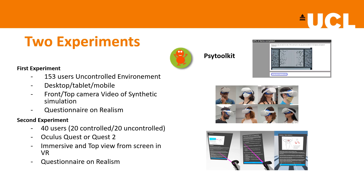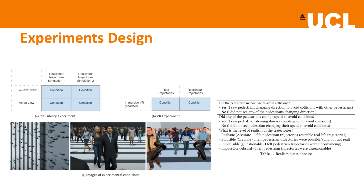The second experiment was performed in VR and measured how users perceived the realism of rectilinear trajectories compared with the real trajectories. We also aimed to understand how much trajectory realism impacted the level of immersion experienced by the participants. Both experiments have similar designs. While the first experiment highlights how synthetic simulations are affected by the point of view, we selected the most realistic point of view for the second experiment to compare with the immersive scenario. In VR, we compared trajectories from real data to synthetic ones.